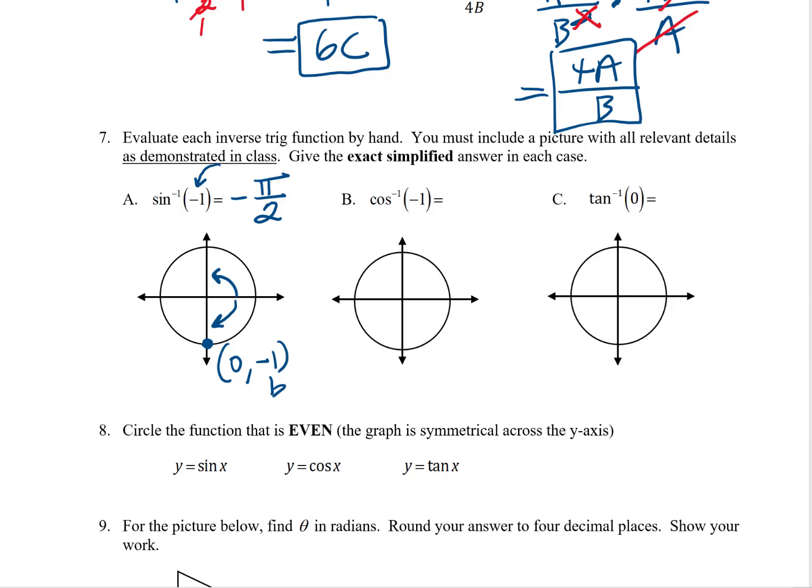Letter B, cosine inverse of negative 1. This is the same idea. Now the cosine inverse function only knows angles between 0 and 180, so I've got to find a point somewhere in there. The cosine function gives you the A coordinate on the unit circle, so I need a point where the A coordinate is negative 1. I believe the only such spot would be right here. This is the point negative 1, 0. There's an A value of negative 1, so that's the angle in question. Obviously, this is pi radians or 180 degrees.